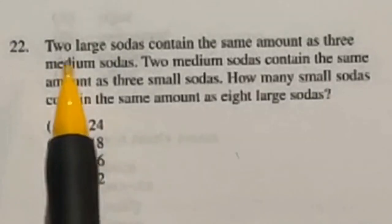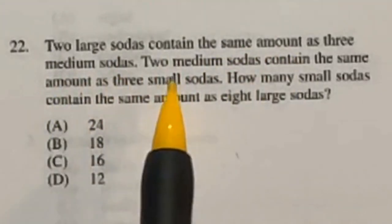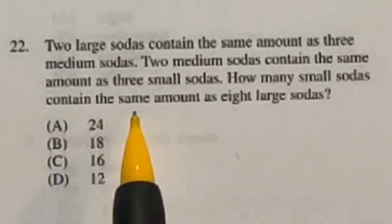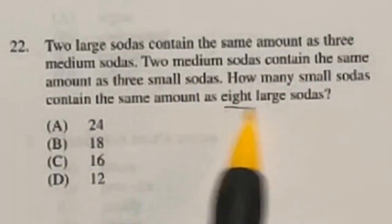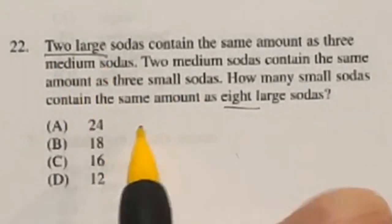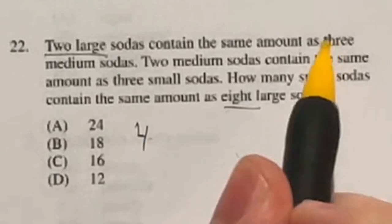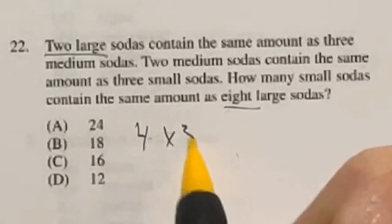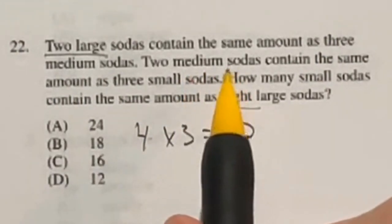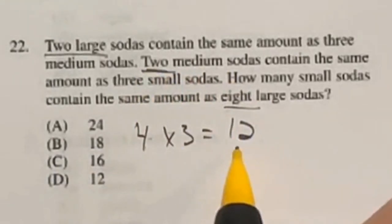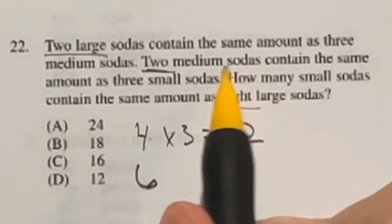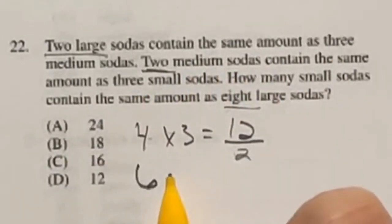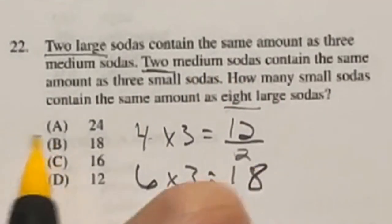Question 22 is a back-and-forth game. Two large sodas contain the same amount as 3 medium sodas, and 2 medium sodas contain the same amount as 3 small sodas. How many small sodas equal 8 large? First, 8 divided by 2 gives 4 groups of large, each equal to 3 medium, so 4 times 3 is 12 medium. Then 12 divided by 2 gives 6 groups, each equal to 3 small, so 6 times 3 is 18. Final answer: B.